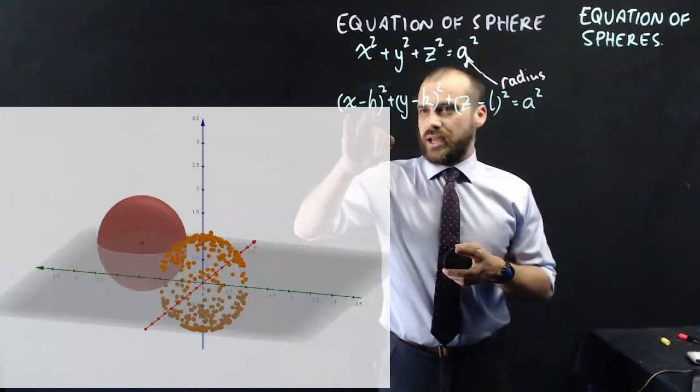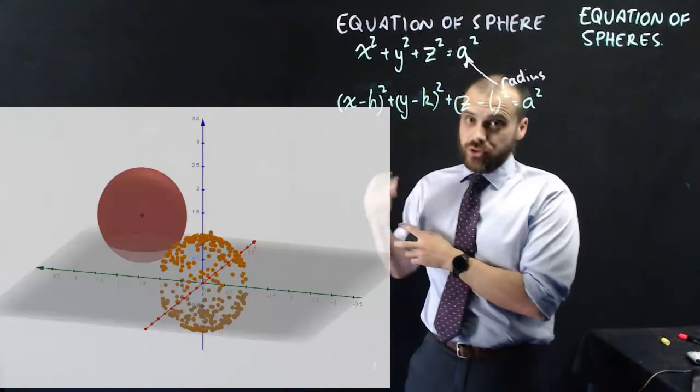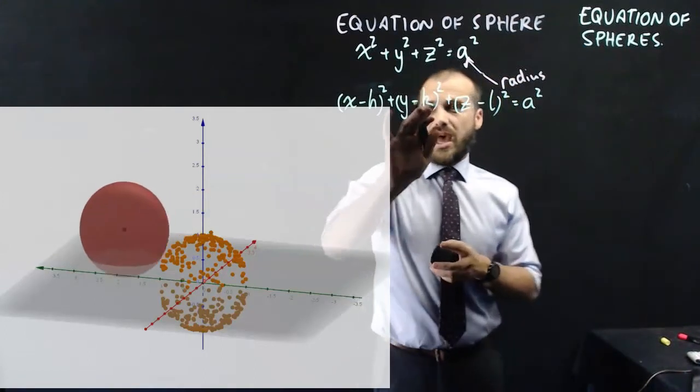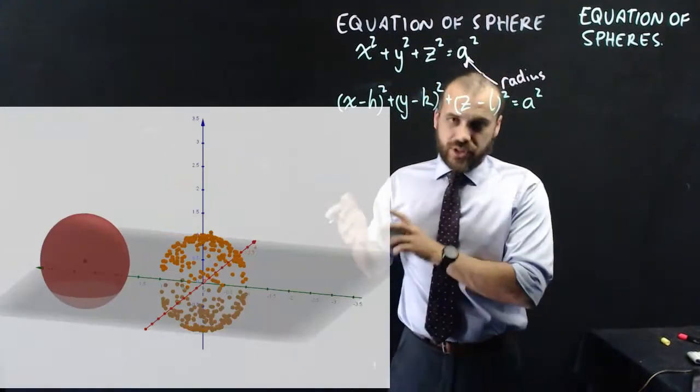So that h value, if we subtract, say, three from it, it's going to move it forward along the x-axis. If we add something here, it's going to move it backwards along the y-axis.